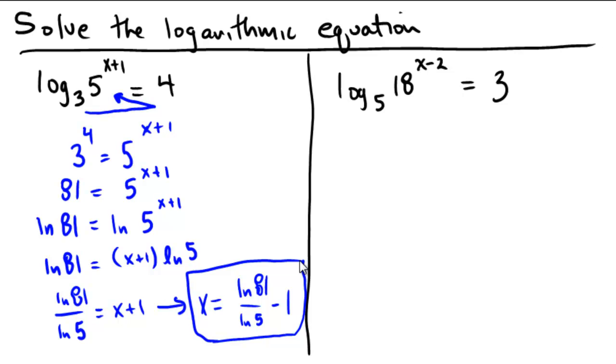Okay, now let's do the second one in a slightly different way, where we actually use the change of base rule that I call in class 4 star. Here we have a power on a logarithm. So right from the beginning, you can pull that power out in front and say x minus 2 multiplied by log base 5 of 18 equals 3.